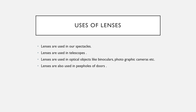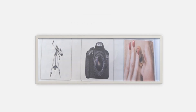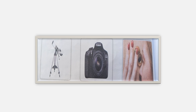Lenses are also used in the peephole of doors for security purposes. The peephole allows us to see from inside who is outside — who is ringing the bell — so peepholes also consist of lenses. Here you can see the different uses of lenses in telescopes, cameras, and peepholes of doors.